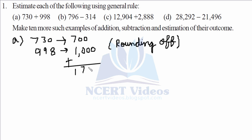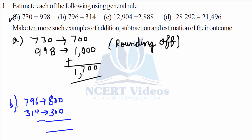For part B, 796 is converted to 800 and 314 is closest to 300. According to the general rule, we subtract: 800 minus 300 gives us 500 as our answer.